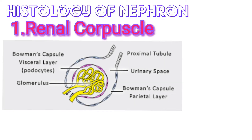First is the renal corpuscle. The nephron consists of a tubule closed at one end, with the other end opening into a collecting tubule. The closed end forms a cup-shaped glomerular capsule, also known as Bowman's capsule, which almost completely encloses a network of tiny arterial capillaries called glomeruli, which resembles a coiled tuft.